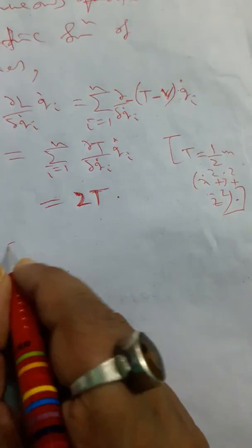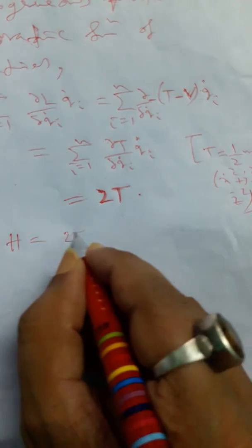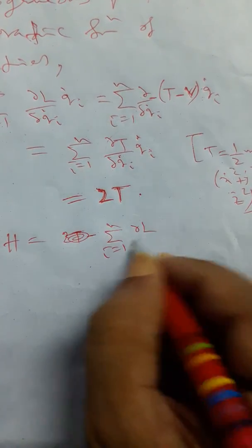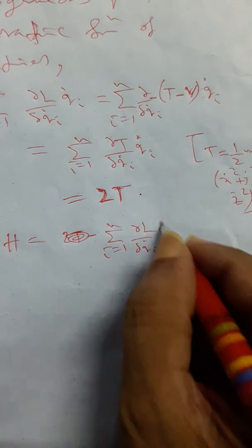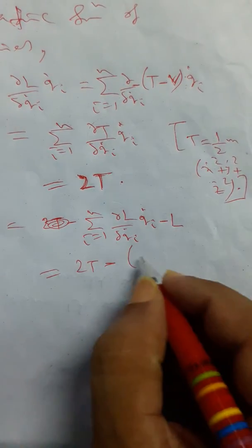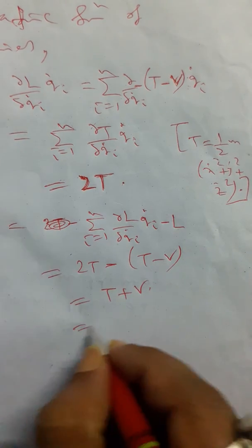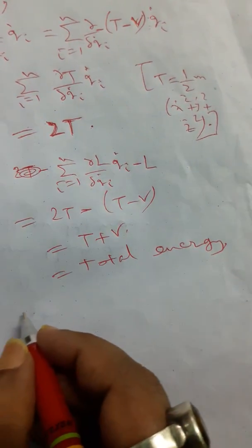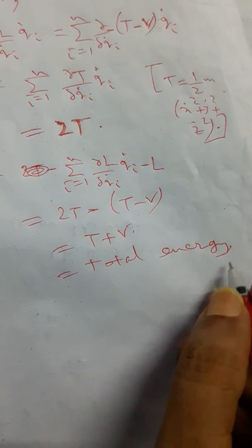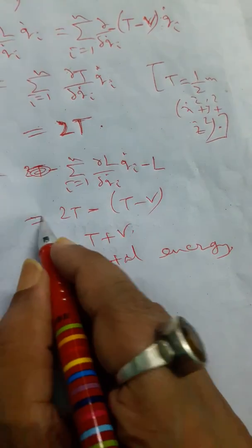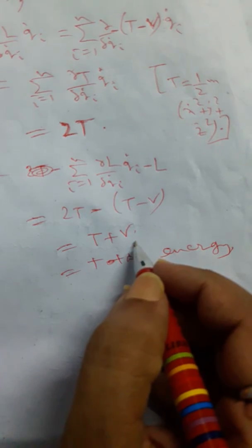Applying Euler's theorem, we have: H (the Hamiltonian) = ∑(∂L/∂q-dot-i) times q-dot-i minus L = 2T minus L = 2T minus (T minus V) = T plus V. So H equals T plus V, which is the total energy. Therefore, we can say that H can be interpreted as generalized energy and the Hamiltonian equals total energy — that is, kinetic energy plus potential energy.